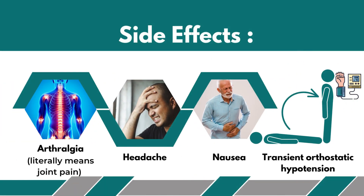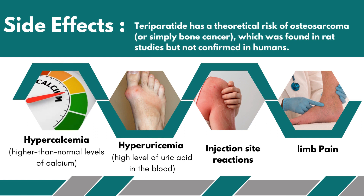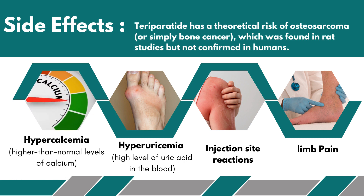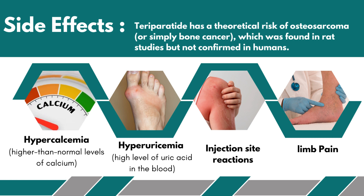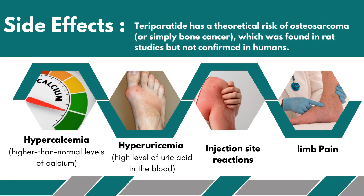Side effects: Arthralgia — literally means joint pain. Headache. Nausea. Transient orthostatic hypotension — a drop in blood pressure that occurs when moving from a lying down (supine) position to a standing (upright) position. Teriparatide has a theoretical risk of osteosarcoma, or simply bone cancer, which was found in rat studies but not confirmed in humans. Hypercalcemia — higher than normal levels of calcium. Hyperuricemia — high level of uric acid in the blood. Injection site reactions. Limb pain.